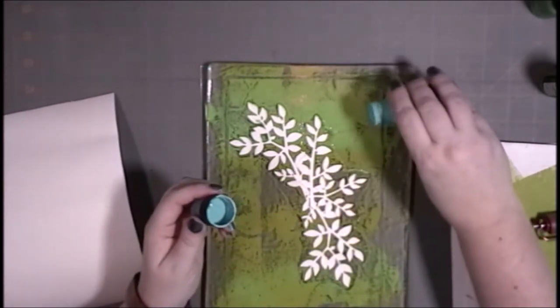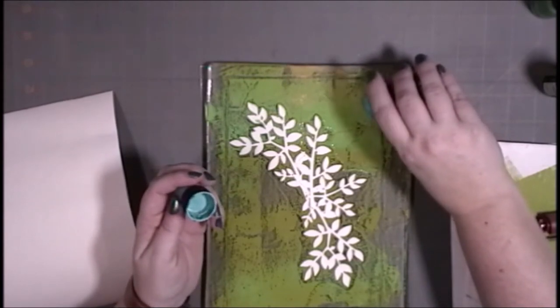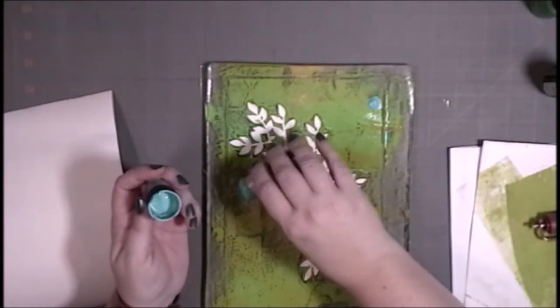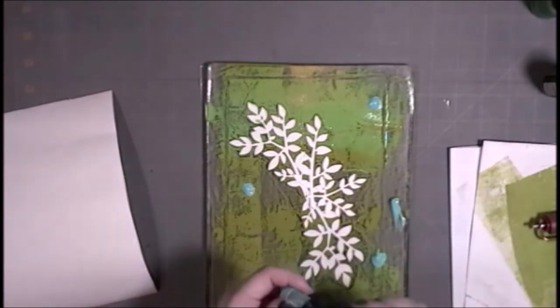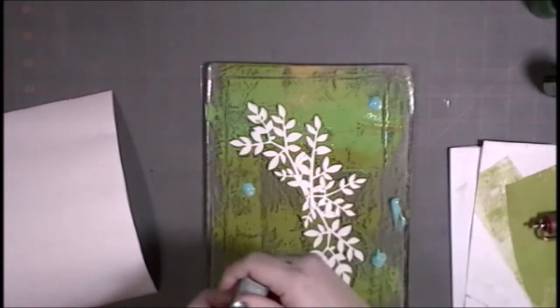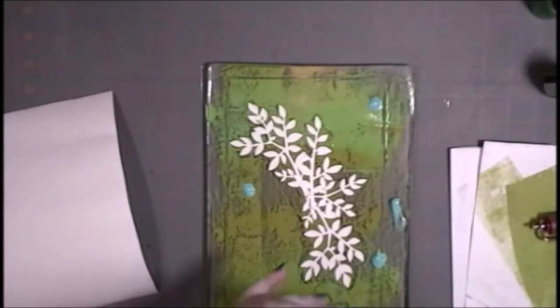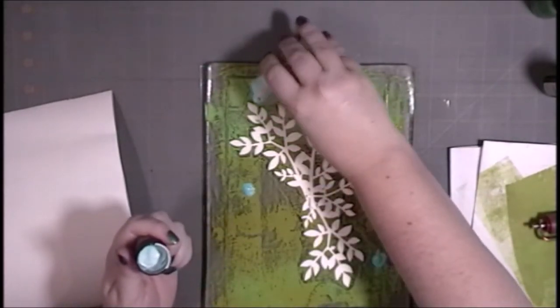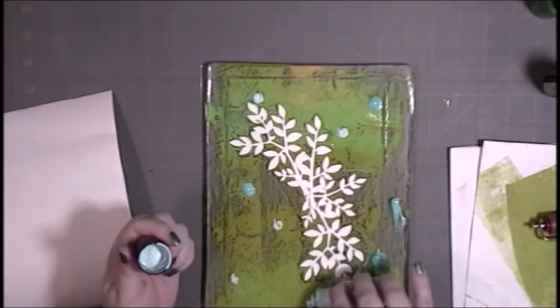So the next thing I'm going to do is add some blue paint on top of the green paint and on top of those die cuts. Yes, on top of them. The great thing about gel plate printing is that you add layer on layer on layer to develop that visual and physical texture.